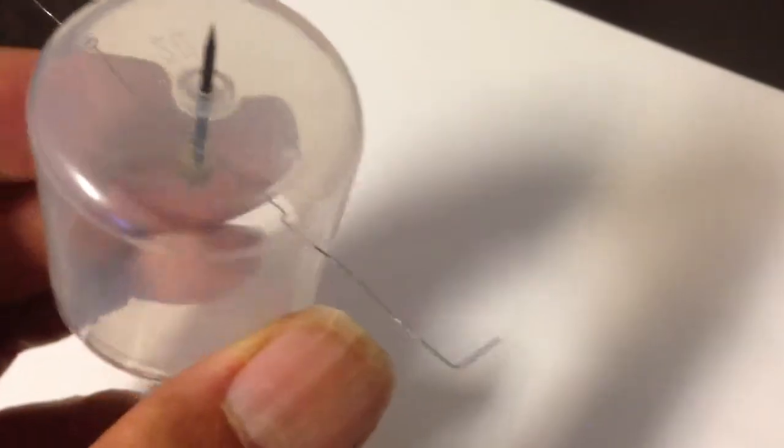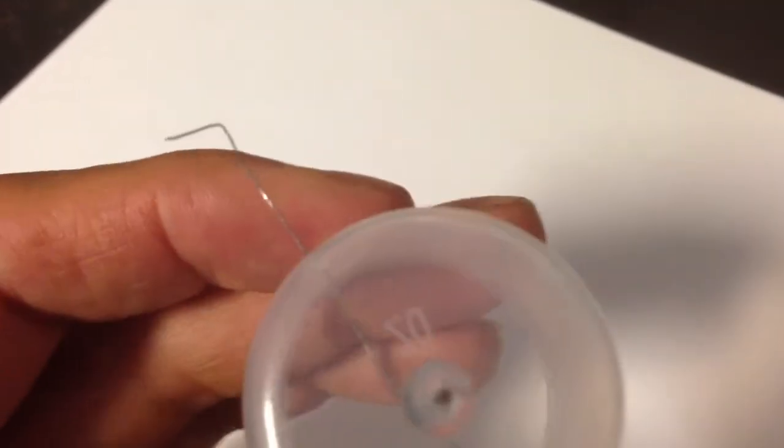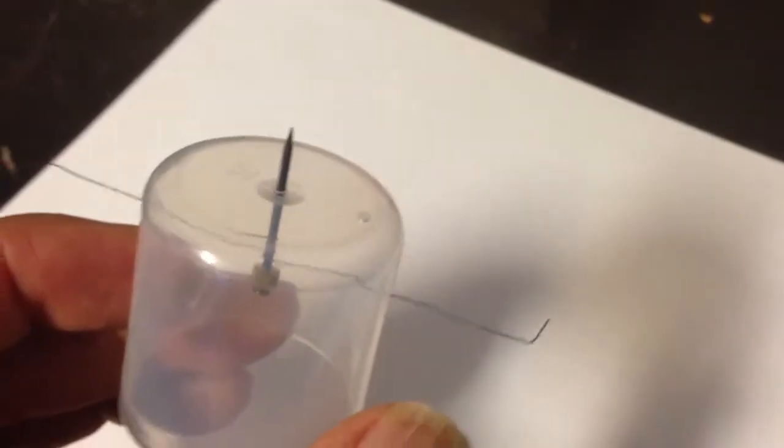This is ferrous or iron wire. You can get that out of picture frame hanging wire. Just un-strand it. There you go.